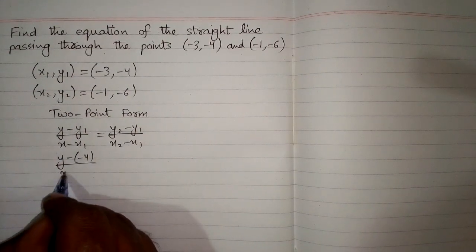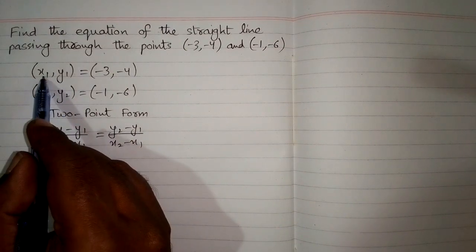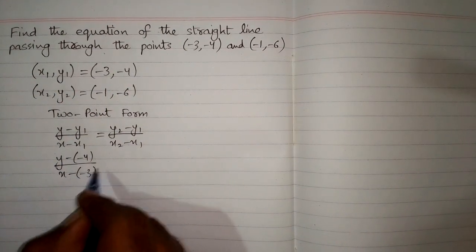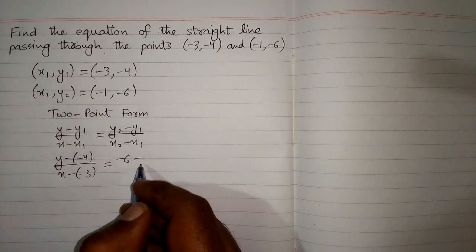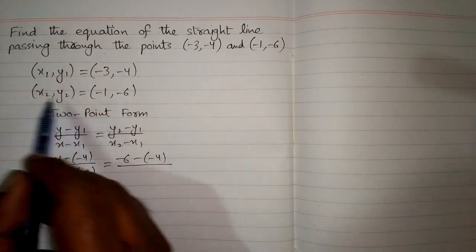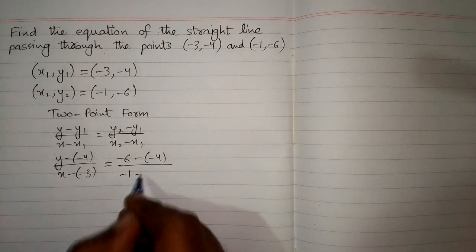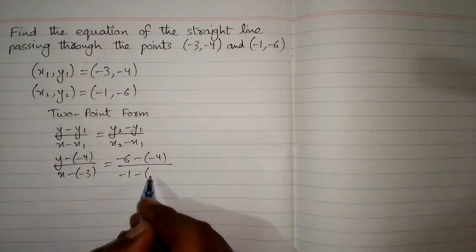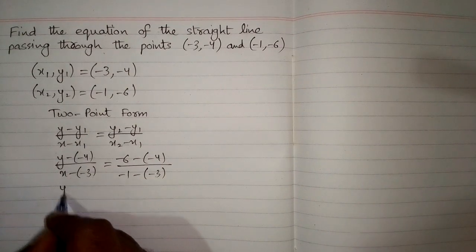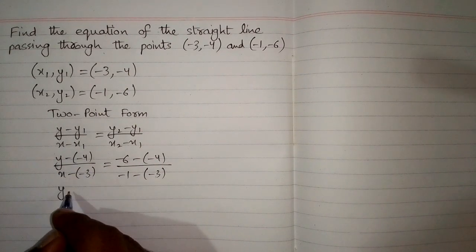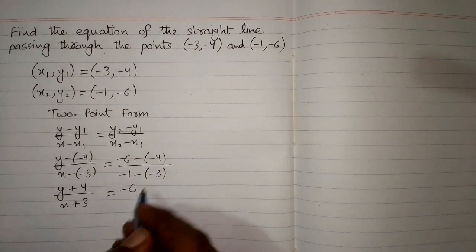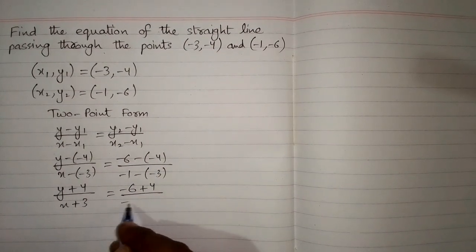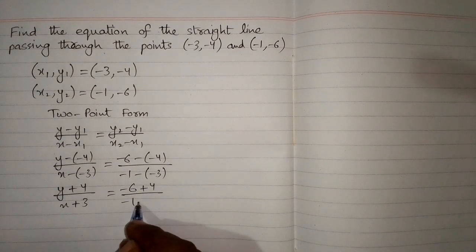we put minus 4 in place of y1, and the value of x1 is minus 3, so we put minus 3 in place of x1. The value of y2 is minus 6, y1 is minus 4, x2 is minus 1, and x1 is minus 3. So minus times minus 4 is plus 4, and minus times minus 3 is plus 3, giving us y plus 4 upon x plus 3, and minus 6 minus minus 4 upon minus 1 minus minus 3.